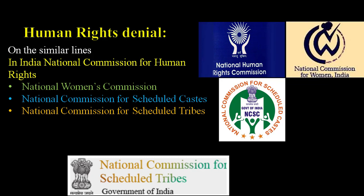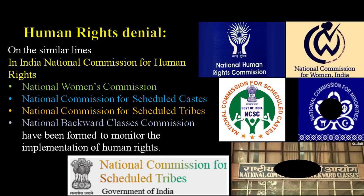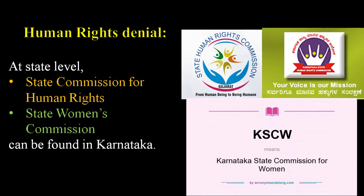On similar lines in India, the National Commission for Human Rights, National Women's Commission, National Commission for Scheduled Castes, National Commission for Scheduled Tribes has been appointed for the welfare of citizens. Apart from this, National Backward Classes Commission have been implemented to monitor the implementation of human rights. At the state level, a Human Rights Commission can be found in Karnataka.